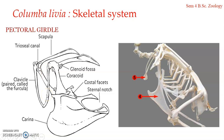The clavicles are a pair of slender, curved, delicate rod-like bones, connected by their expanded upper ends with the scapula and the acrocoracoid process of the coracoid, enclosing a circular foramen trioseum, also referred to as the trioseal canal.